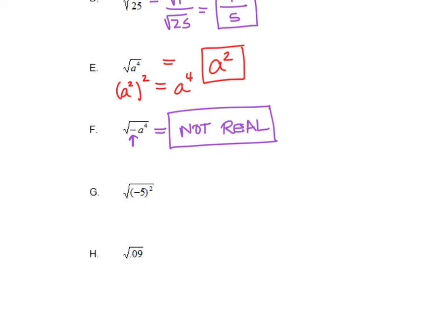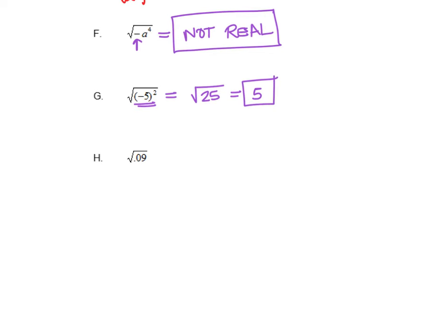Letter G is a little bit trickier. There's a negative inside the square root, so our instinct is to say not real. However, this negative 5 is being squared. If we simplify, negative 5 squared is positive 25, and now it's actually the square root of a positive number, so the square root of 25 is 5. Letter H is the square root of 0.09 — you can type that into your calculator and get 0.03, which makes sense because the square root of 9 is 3, so the square root of 0.09 is 0.03.